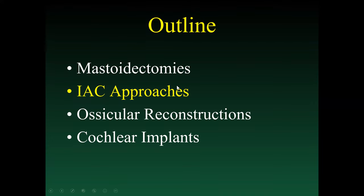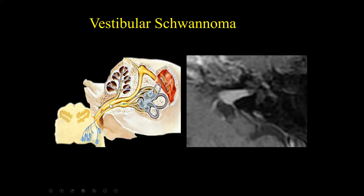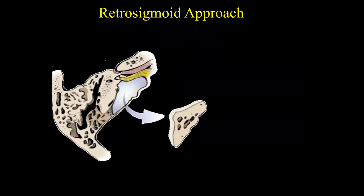Now we'll cover approaches to the internal auditory canal. These are typically performed to resect vestibular schwannomas. Here's a classic example of a vestibular schwannoma arising in the internal auditory canal, most typically involving the superior vestibular nerve.